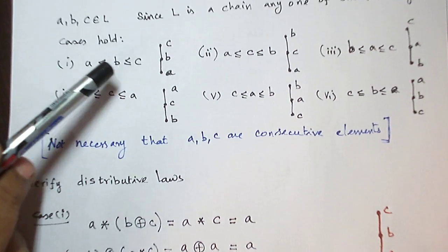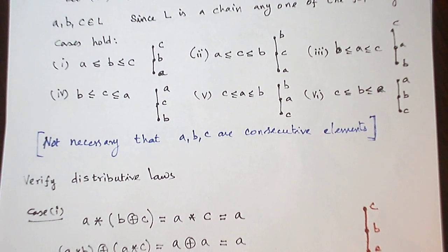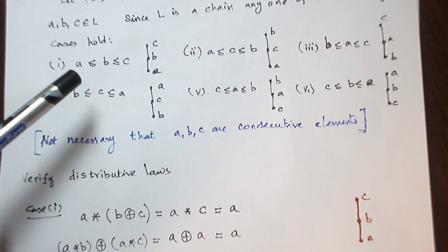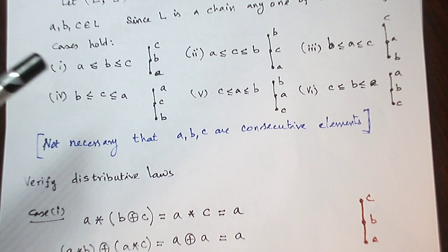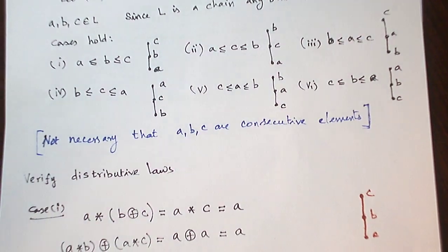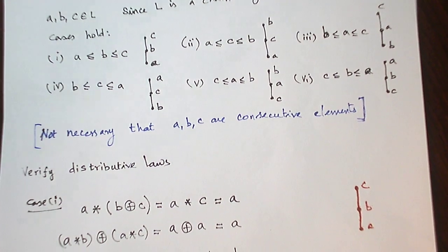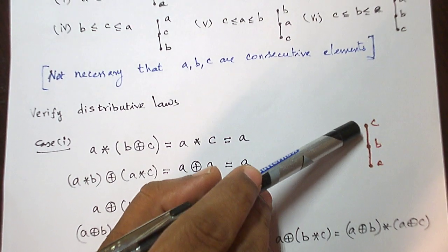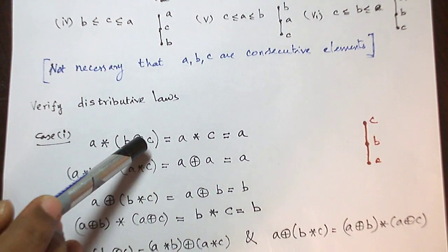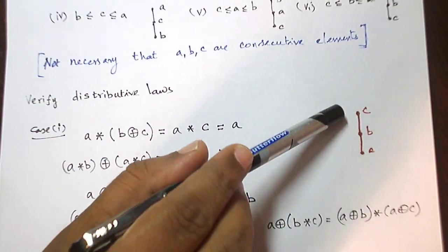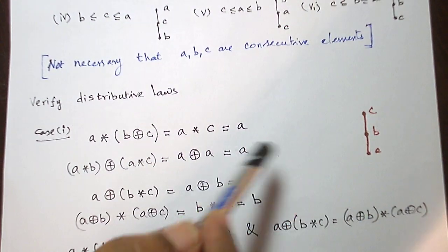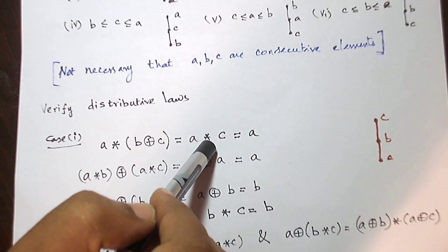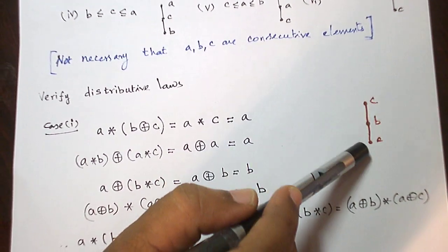First let us take the first case: A ≤ B ≤ C. In lattices, if two elements are comparable, then A∧B is the smaller among them and A∨B is the larger among them. So for A∧(B∨C): B∨C — the larger among B and C — is C. Then A∧C: the smaller among them is A.